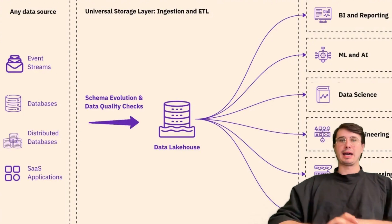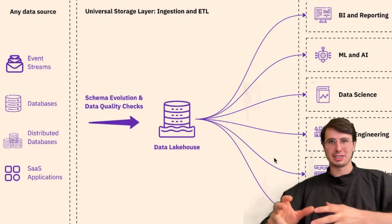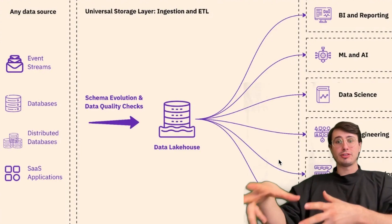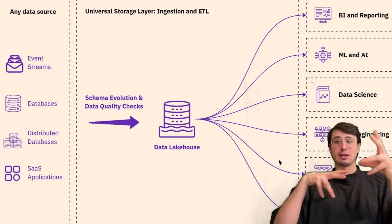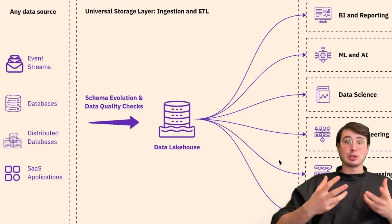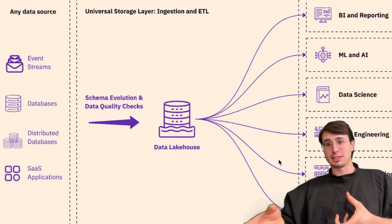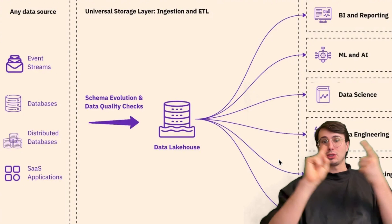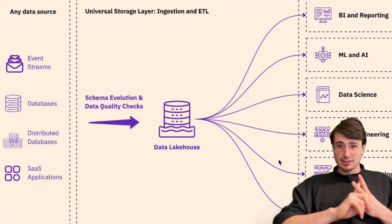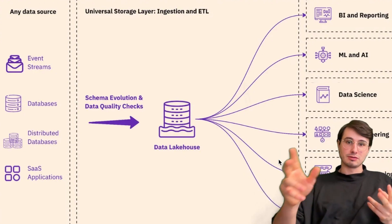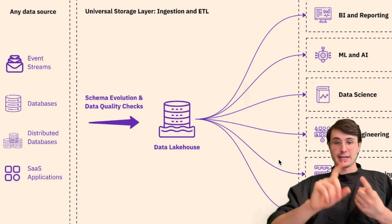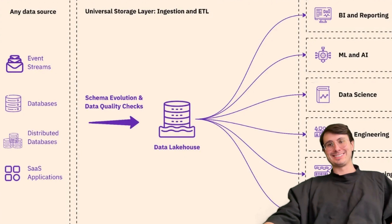An example response would be: I handle schema evolution by using format-specific features like schema evolution in Apache Avro or Parquet. To support backwards compatibility, I would allow new fields with default values and ensure existing fields aren't removed or altered unexpectedly. In a data warehouse like BigQuery, I would use a schema migration tool to validate and roll out changes incrementally. This shows you know the formats for efficient schema evolution and the process to implement it.